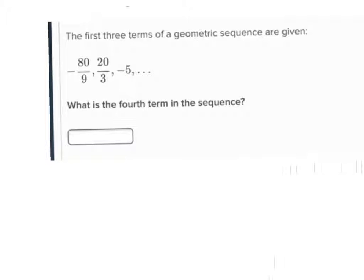Right? Now, here's the way you can think of it. Negative 80 over 9 times what number? I'm going to let n be what we don't know. Negative 80 over 9 times what number makes my result 20 over 3?